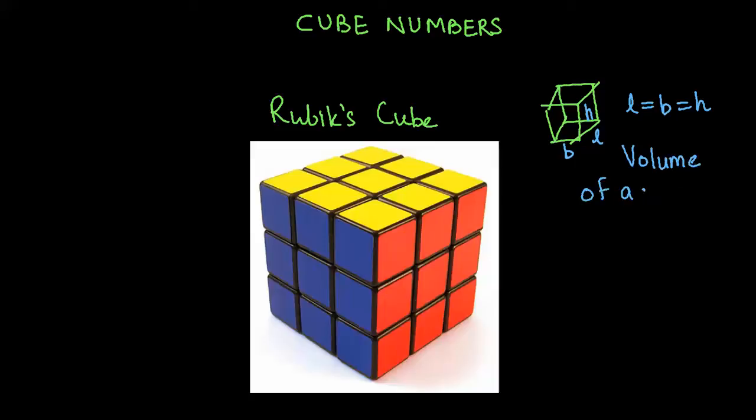equals its length into breadth into height which is actually L multiplied by L multiplied by L, or you could also use B multiplied by B because L, B and H are same, or L to the power 3.